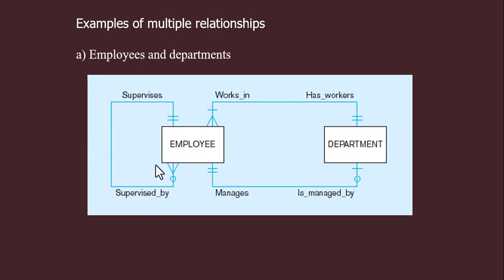This is an example of a unary relationship showing that an employee supervises employees, or an employee is supervised by an employee. An employee can supervise many employees, but it is not necessary that a particular employee supervises all employees — so there is also an optional constraint here.